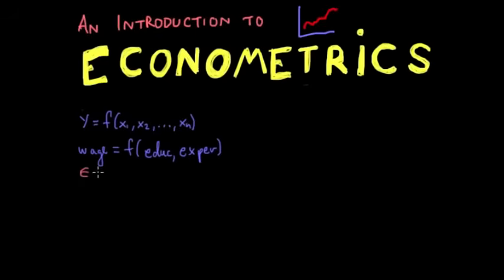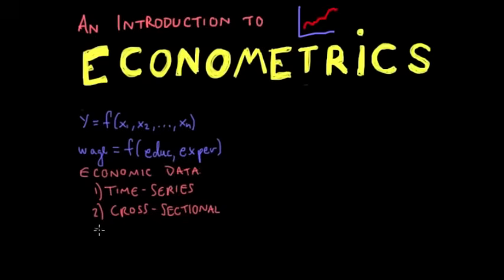There's three main types. Essentially, the first is called time series, and you might be used to dealing with this already. It's the most basic of data sets. The second would be called cross-sectional, and you might have heard these before in an econometrics class or a statistics class. The third is called panel data, which is the hardest to deal with, but we will get into that later.